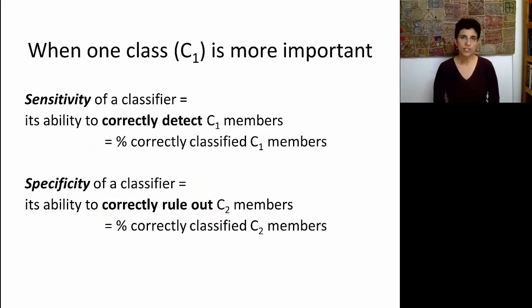In particular, a set of metrics that are very popular when one class is more important than the other are sensitivity and specificity. Sensitivity is the ability of the classifier to correctly detect the important members. In other words, it's the percent of correctly classified C1 members. The complement to that, but not complement in terms of mathematical terms, but in terms of how useful this algorithm is, is specificity. And specificity is the ability of the algorithm to correctly rule out the unimportant members, which is the percent of correctly classified C2 members.